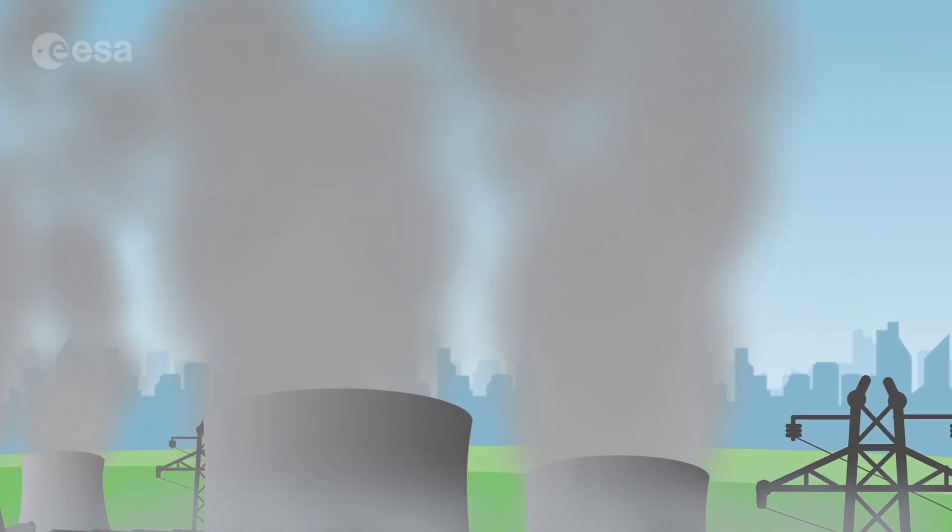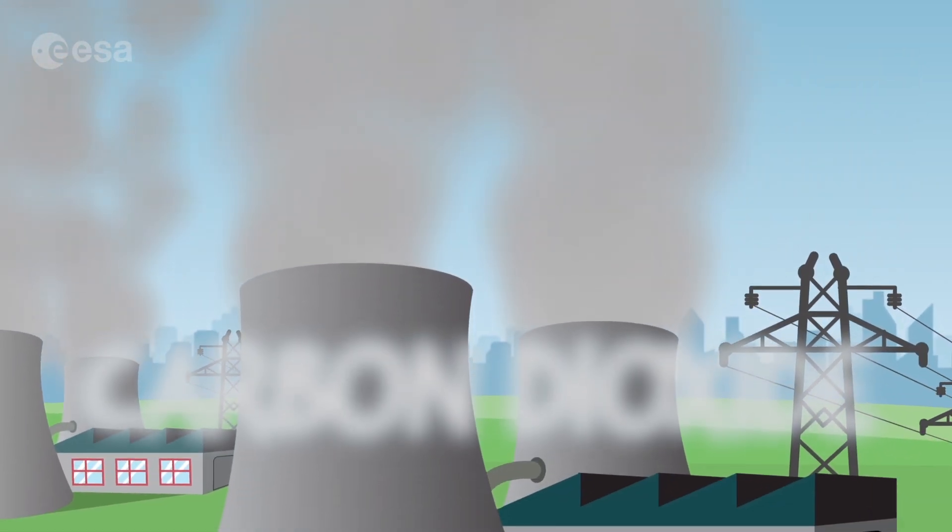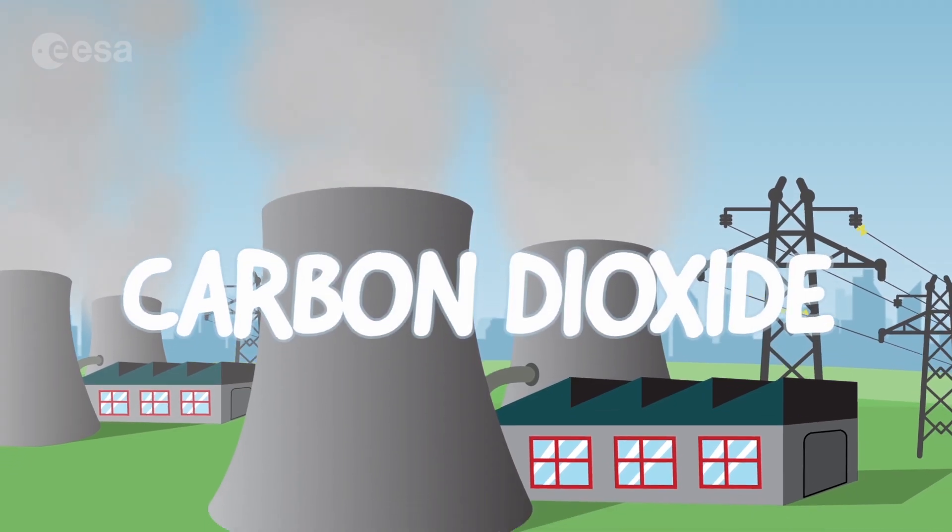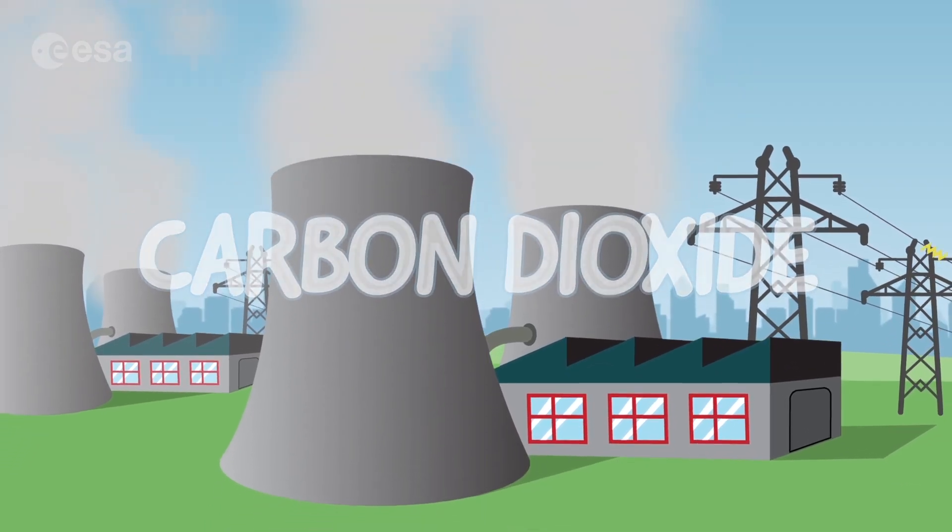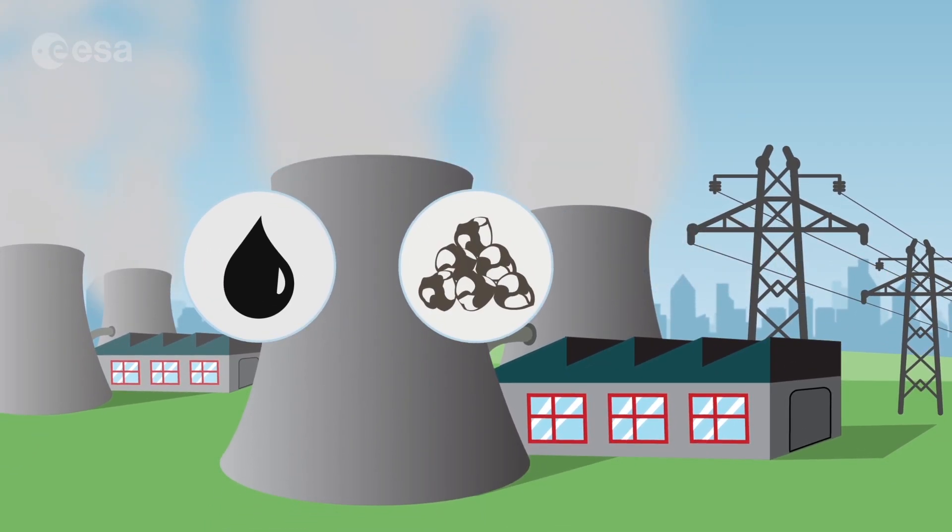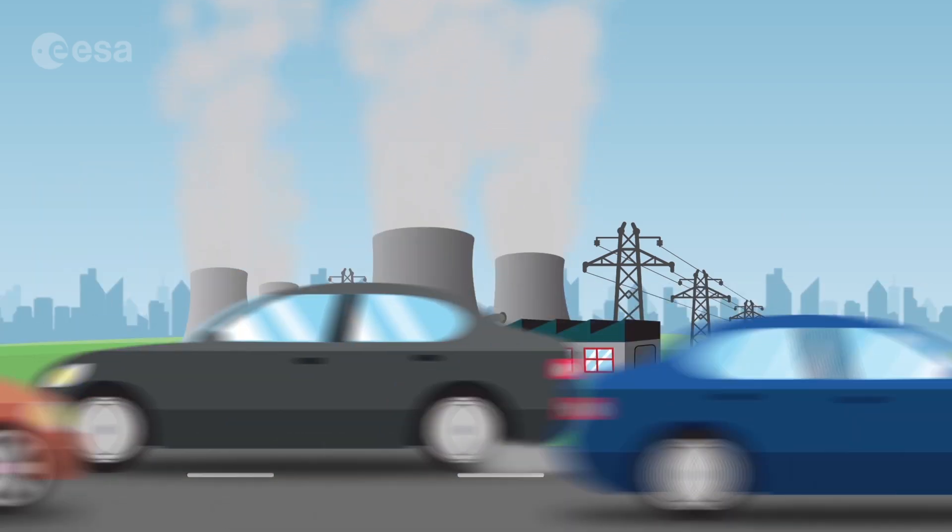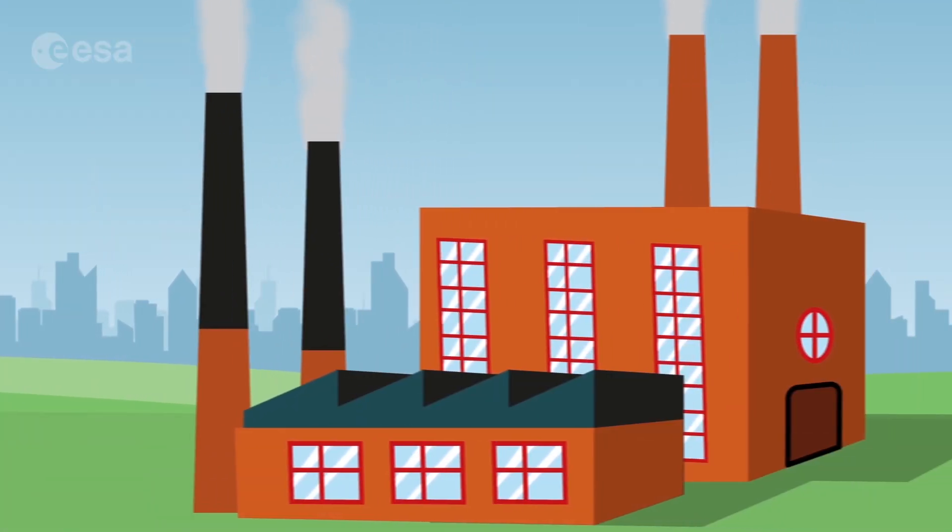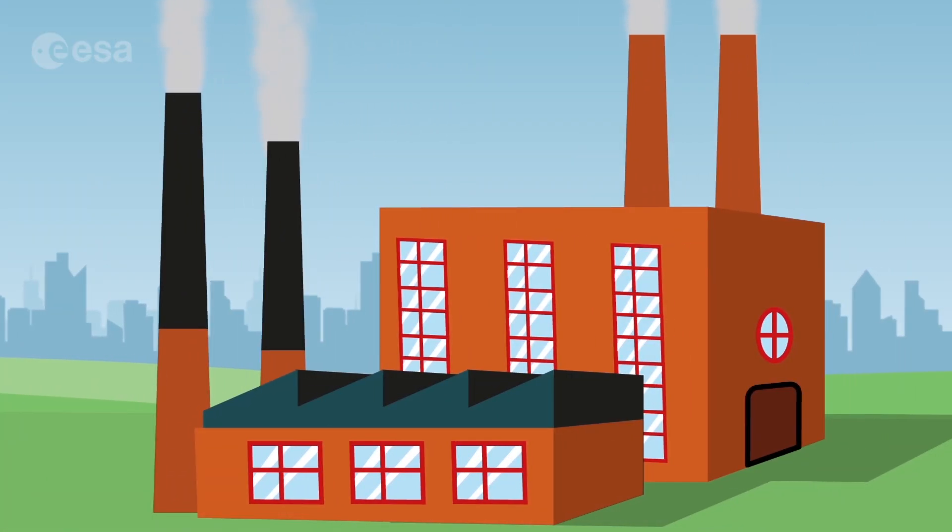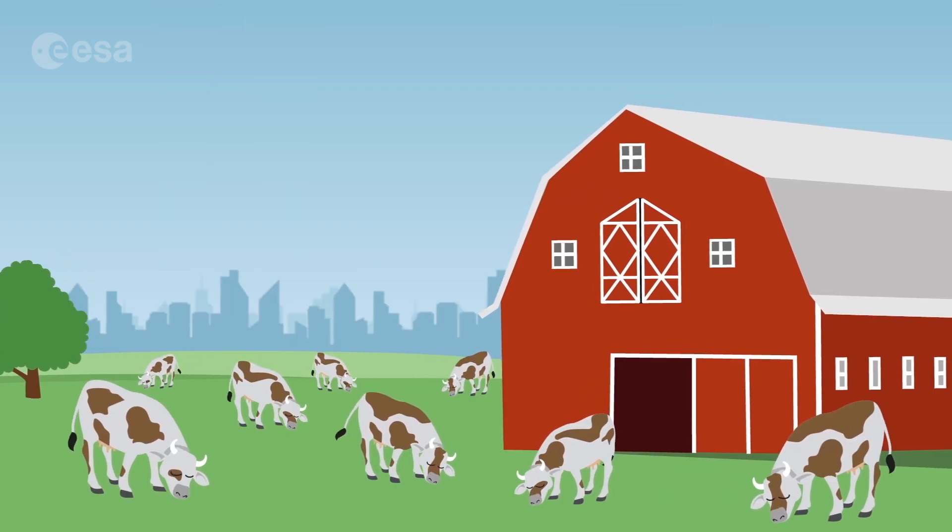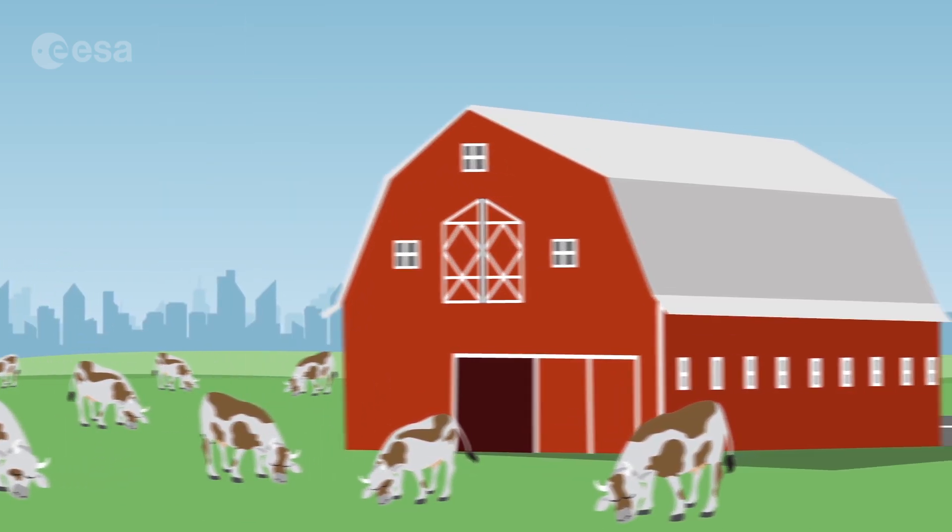Human activity increased the amount of greenhouse gases in the atmosphere to dangerous levels, especially carbon dioxide. How? By burning oil, coal and natural gas for energy. By driving cars. By polluting the environment with factories, and raising huge quantities of animals for the food industry.